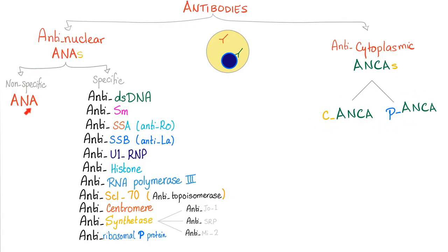Anti-nuclear antibodies: we have non-specific ANA — without the S — and then we have the specific ANAs, which include about 11 or more. Anti-double-stranded DNA, anti-Smith antibodies, anti-SSA or anti-RO, anti-SSB or anti-LA. How do I remember them? A-R-O-B-I-L-A — like Italian opera — beautiful but heartbreaking, because I have Sjogren and lupus.